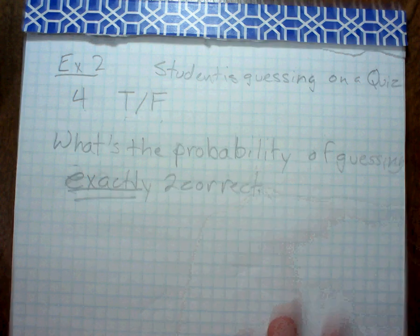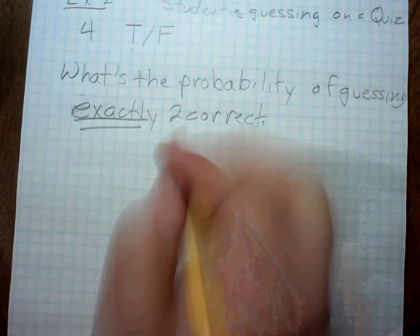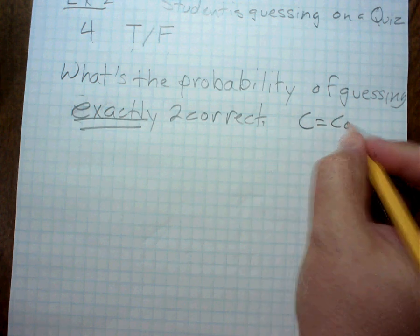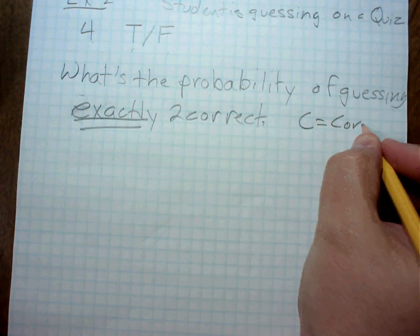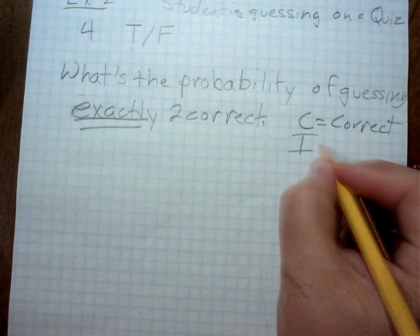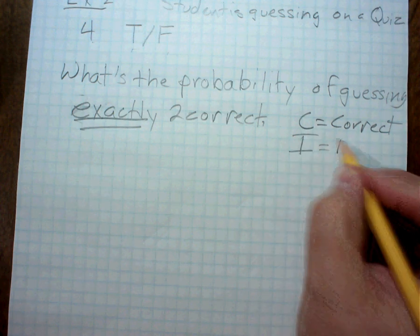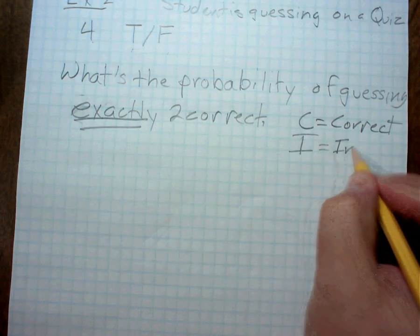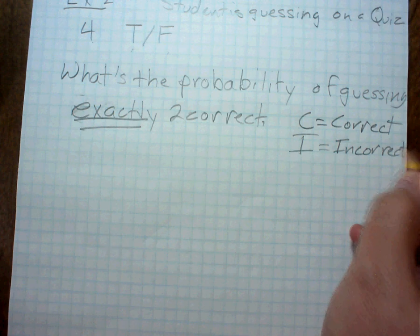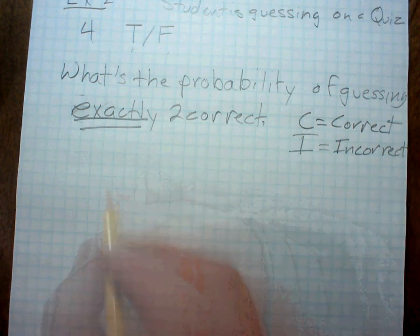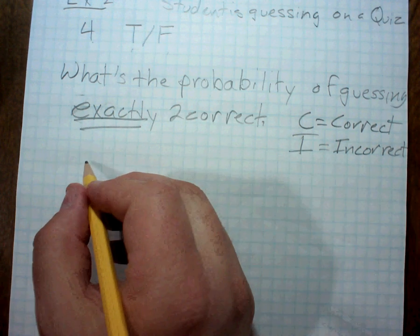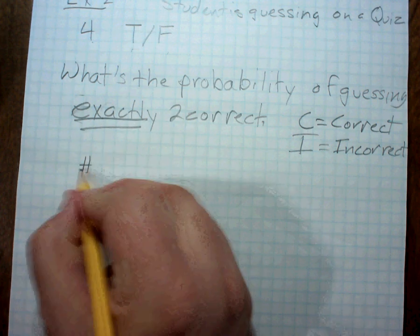We've got to figure out the sample space. I'm going to let C equal the correct answer and I equal the incorrect answer. So the scenario would be, let's talk about the number of correct answers.